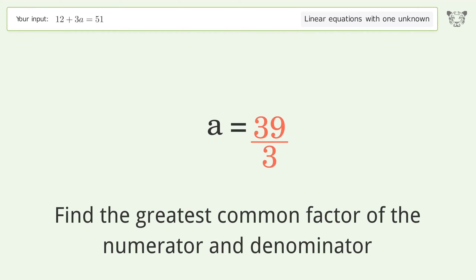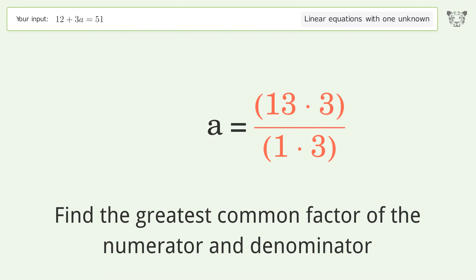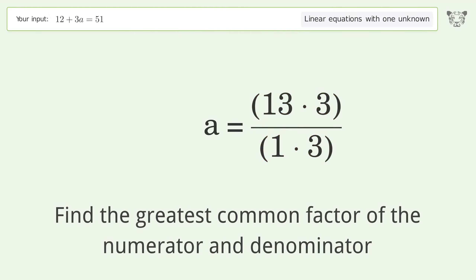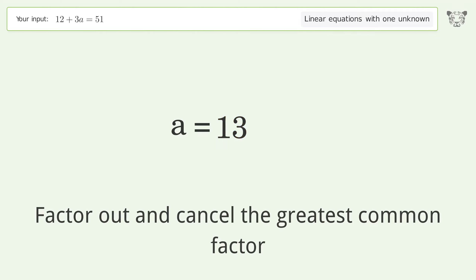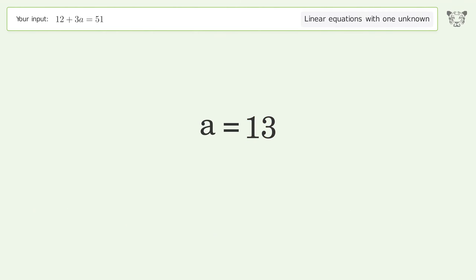Find the greatest common factor of the numerator and denominator. Factor out and cancel the greatest common factor. And so the final result is a equals 13.